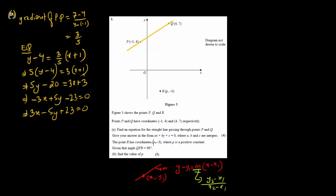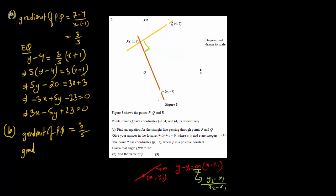Question (b): point R has coordinates (P, minus 3), where P is a positive constant, and angle QPR is 90 degrees. This means line PR is perpendicular to line PQ. Since the gradient of PQ is 3/5, the gradient of PR is the negative reciprocal, which is minus 5/3.